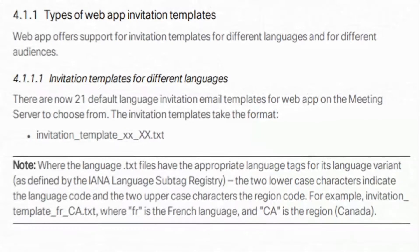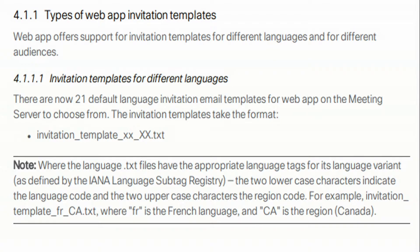Web app offers support for invitation templates for different languages and different audiences. There are now 21 default language invitation templates for the web app on the meeting server to choose from. The invitation template takes a specific format. When we configure our invitation template, it has to be in the name format of invitation_template_lowercase-letters_UPPERCASE-LETTERS.